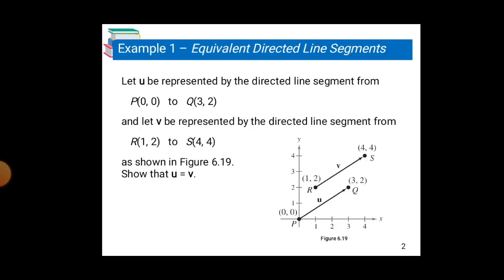For example, equivalent directed line segments: Let u be represented by the directed line segment from P(0, 0) to Q(3, 2), and let v be represented by the directed line segment from R(1, 2) to S(4, 4), as shown in Figure 6.19. Show that u = v.